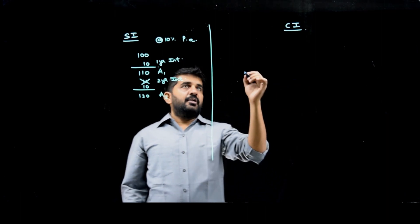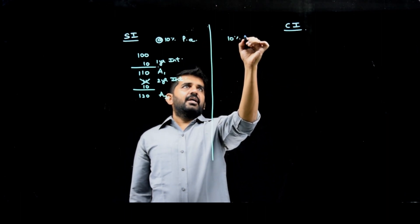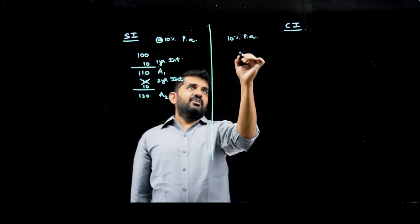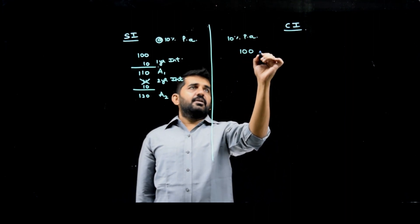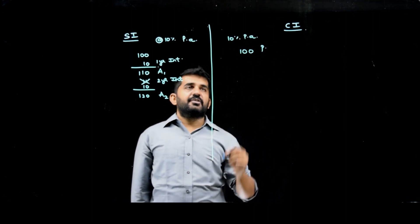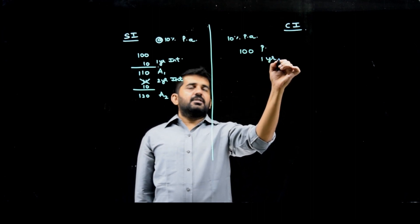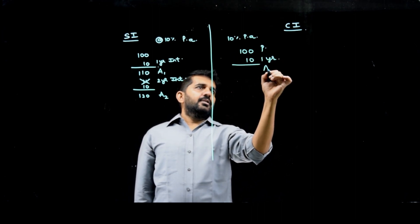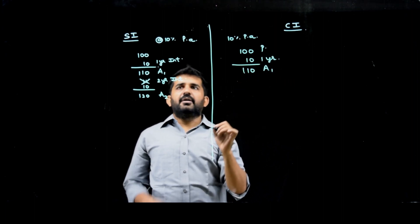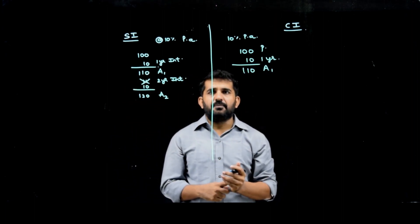In compound interest, if the same rate is used, 10% per annum, and I have invested the same principal amount, 100 rupees. In first year I will be getting interest of 10 rupees. So amount after one year will be 110 and it will be same as simple interest.